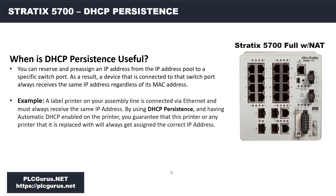When is DHCP persistence useful? You can reserve and pre-assign an IP address from the IP address pool to a specific switch port. As a result, a device connected to that switch port always receives the same IP address regardless of its MAC address. A good example is a label printer on your assembly line connected via Ethernet that must always receive the same IP address so it can get label information from a server upstream.